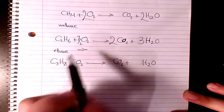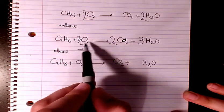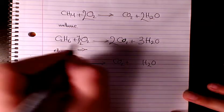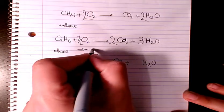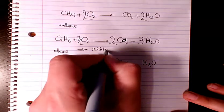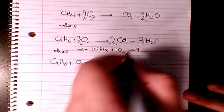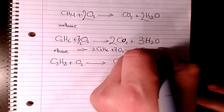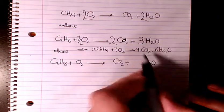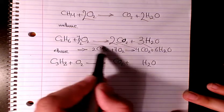So everything is balanced. If you want to have whole number, not a fraction, you can multiply everything by two. So it's going to be 2C2H6 plus 7O2. It gives 4CO2 plus 6H2O. So I basically multiply everything by two.